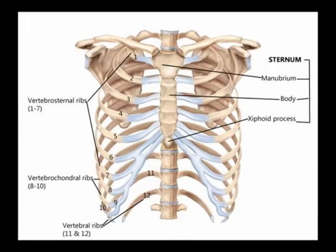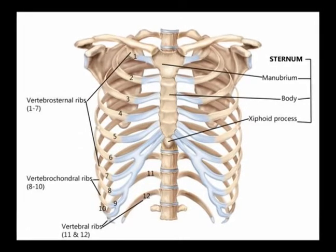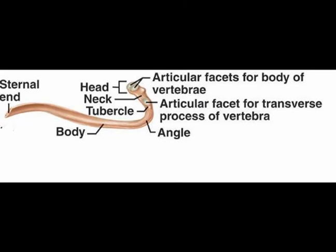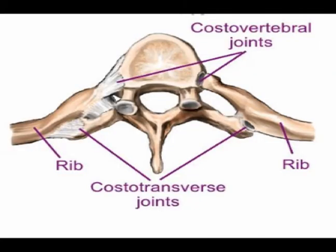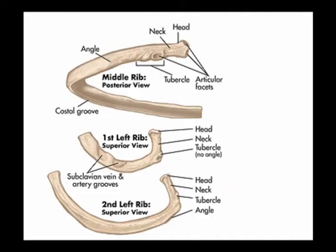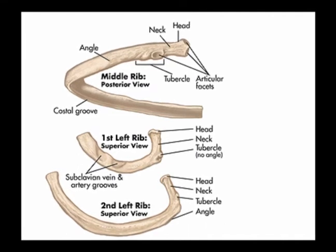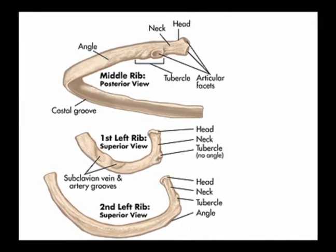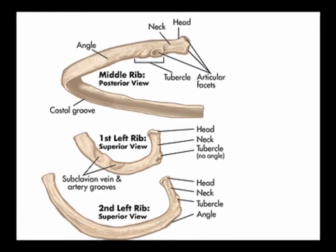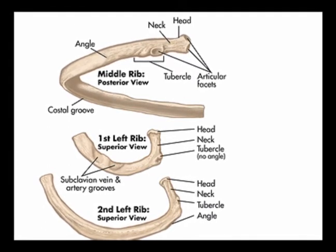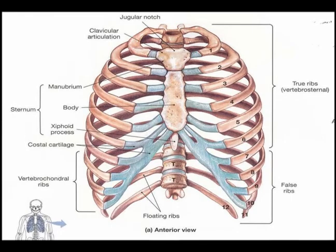The ribs have several different sections to them. The head of the rib articulates with either one or two vertebrae in the thoracic spine, depending on which rib it is. It is the rib head that articulates with the spine, and then the neck of the rib comes laterally from the head, and the shaft of the rib wraps all the way around to the anterior aspect of the rib cage.